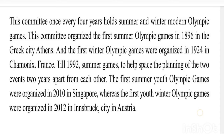We have summer Olympics and winter Olympics. Every four years we have our summer Olympics and winter Olympics, conducted by the IOC. This committee organized the first summer Olympic games in 1896 in the Greek city of Athens. The first winter Olympic games were organized in 1924 in Chamonix, France. From 1992 onwards, summer and winter Olympic games are conducted two years apart from each other, so the gap between one winter Olympic and another is four years, and similarly for summer Olympics.